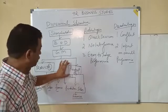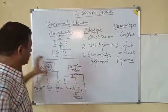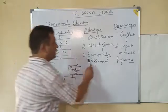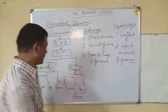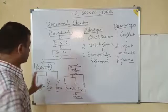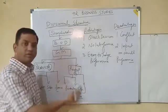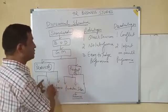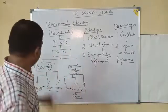The third advantage is easy to judge performance. Since each product department is separate, individual, and independent, if A is doing well and B is not — or vice versa — their performance can be separately judged. If A is not doing well, the company should focus on the betterment of Product A. If B is not doing well, the company should focus on how to enhance the performance of B.